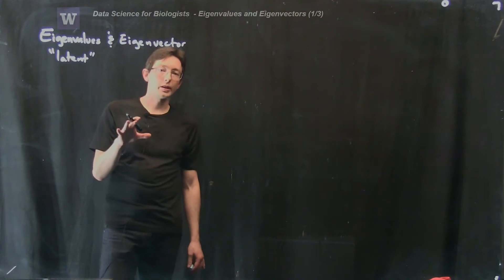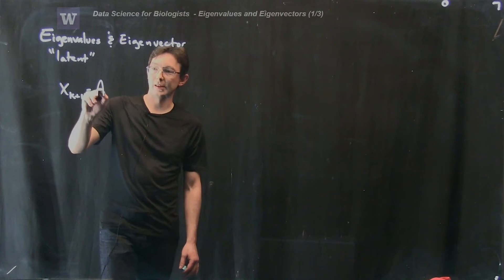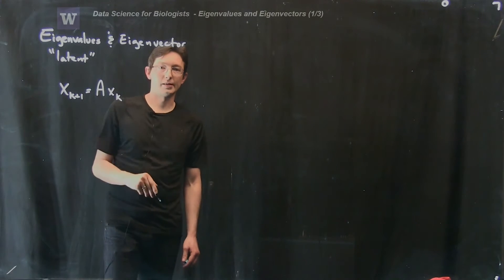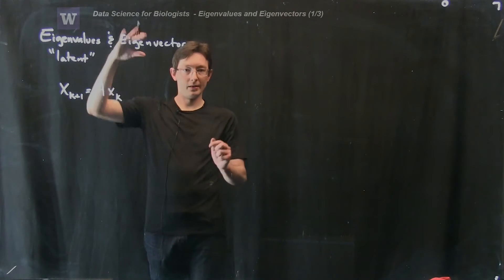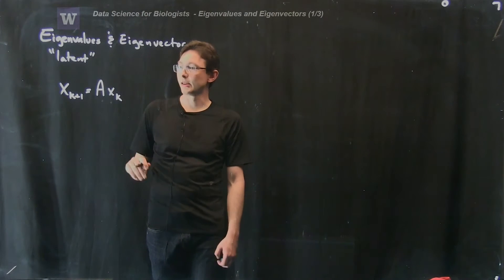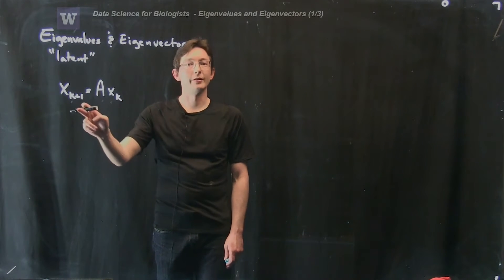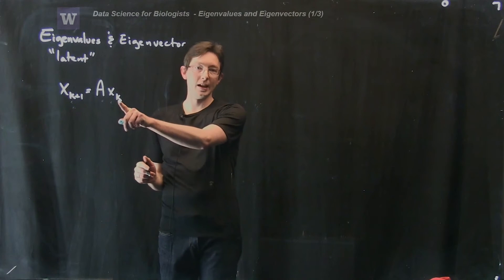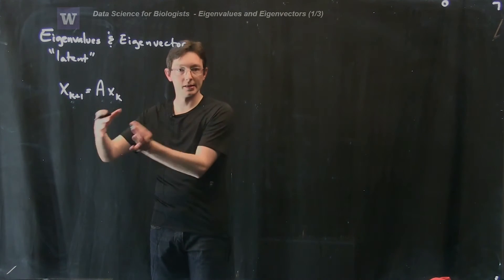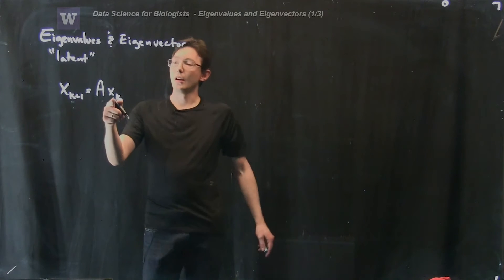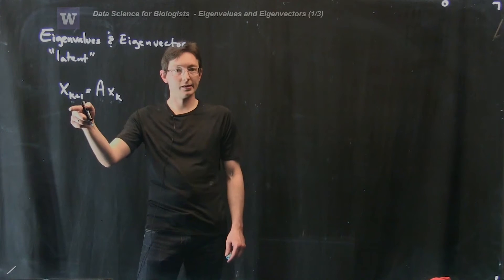We're going to look at this in the context of the system of equations x_{k+1} equals matrix A times x_k. Recall that x is just a vector of numbers, A is a square matrix, and x_{k+1} is another vector of numbers at a later time. Think of this as day k and the next day, k+1 — some process that's iterating in time. A tells me how I go from my state at one instance of time to the next.